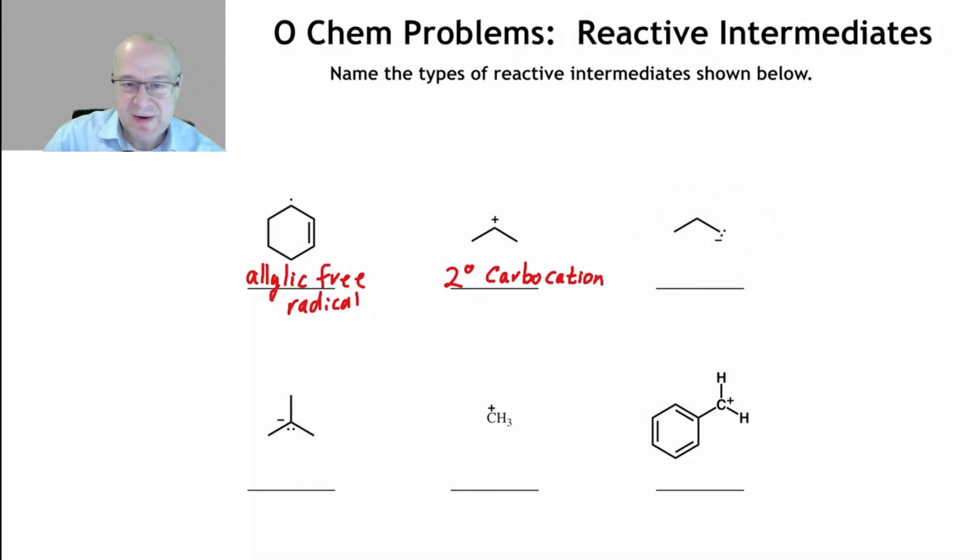This one, we have a carbon with a negative charge. That's called a carbanion. More specifically, it's a primary. So the lone pair is on a carbon that has one alkyl group attached to it. So this is a primary or one degree carbanion.